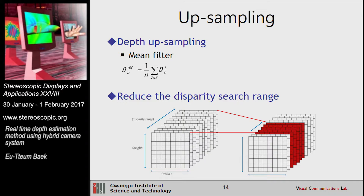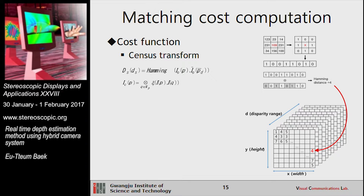The next step is the matching cost computation step. In this step, we use a modified census transform method to calculate the matching cost. Given a window, we first find the center pixel value using a 3x3 mean filter, and then compare each neighbor pixel to the center pixel. If the neighbor pixel is greater than the center pixel, we assign 1; if less, we assign 0. We then transform the window to a 1D vector, use the Hamming distance method to calculate the cost, and assign the cost to the cost volume.